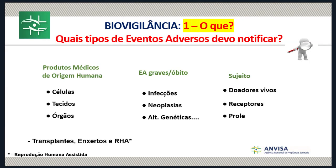Os produtos médicos de origem humana do escopo da biovigilância são as células, tecidos e órgãos utilizados em transplantes, gametos em reprodução humana. Os eventos adversos — os incidentes graves que levam a uma reação adversa — são infecções, neoplasias ou alterações genéticas, entre outros. Os sujeitos são os doadores vivos, os receptores, e se falando de reprodução assistida, a progenitora.